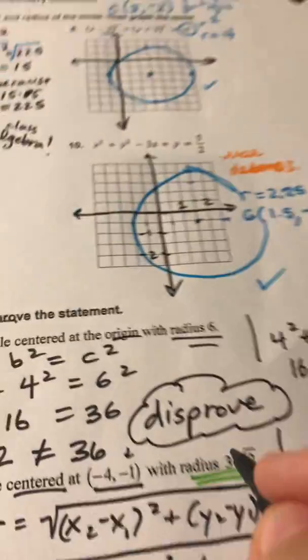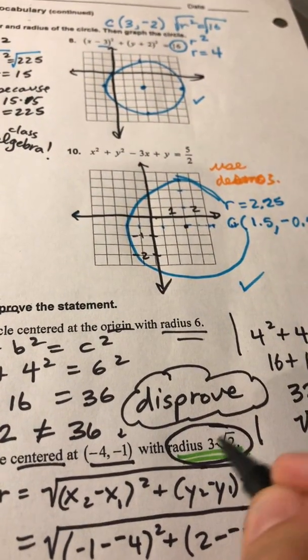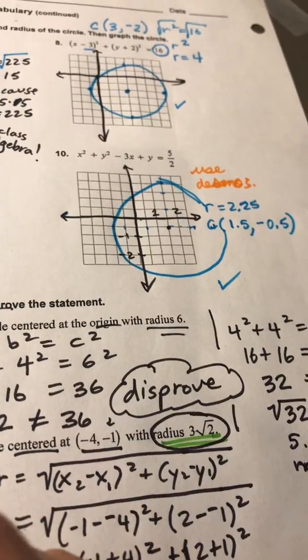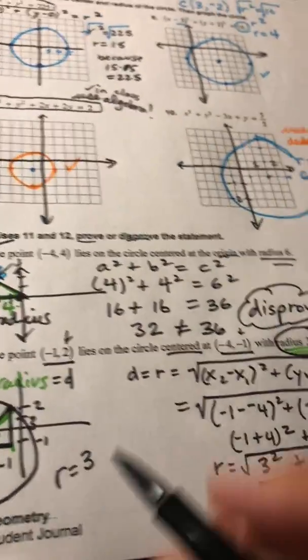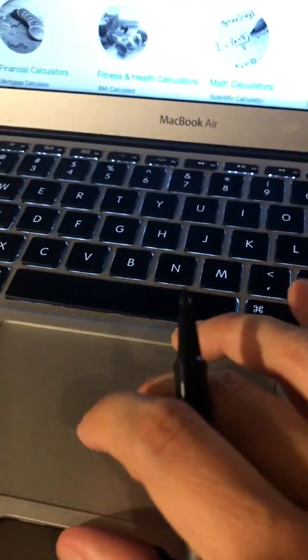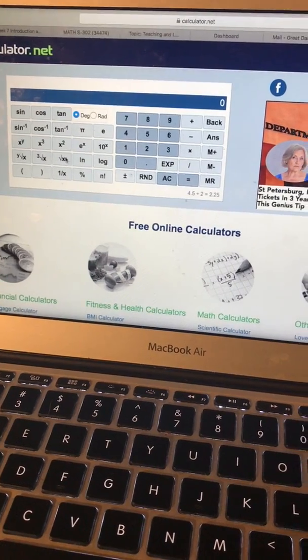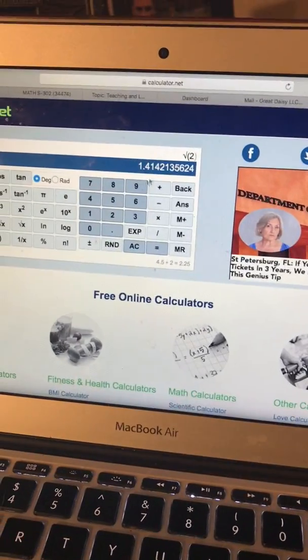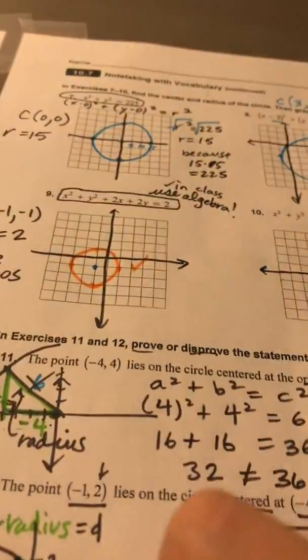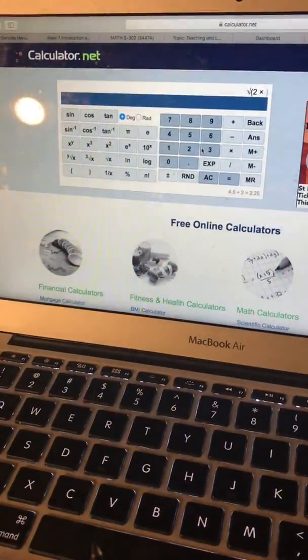Now if I type in, they're claiming the radius is 3 times the square root of 2. So I kind of need to know what the square root of 2 is so that I know what I'm multiplying the number 3 with. So I kind of need to know what the square root of 2 is. Let's figure that out. So the square root of 2 is 1.41. So 3 times 1.41 is what they're claiming is the radius.